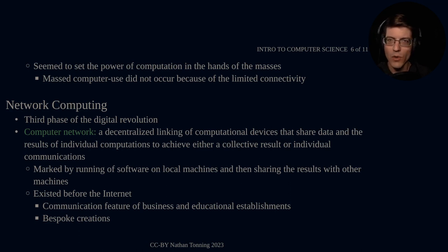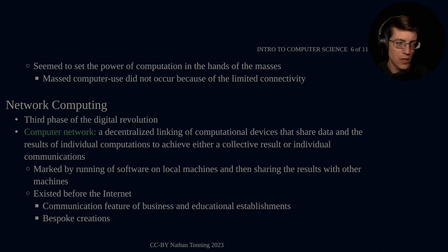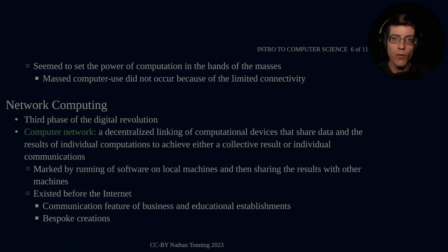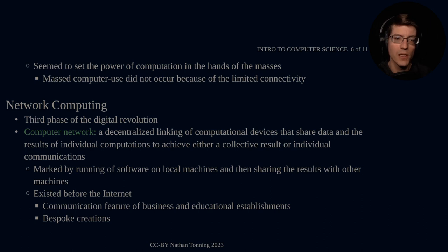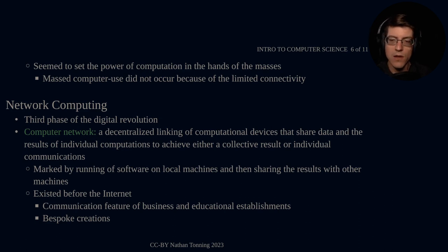A computer network involves running software on local machines and sharing the results with other machines. The internet is the most influential network we use right now, but computer networks existed before and apart from the internet. It was a communication feature of business and educational establishments — used when personnel needed to be updated or records kept for various departments.